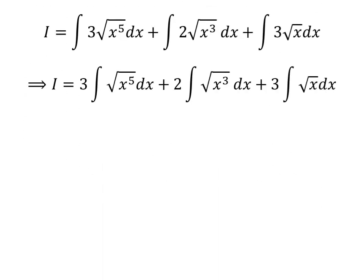Taking out the constants we get I is equal to 3 times the integral of square root of x raised to the power of 5 with respect to x, plus 2 times the integral of square root of cube of x with respect to x, plus 3 times the integral of square root of x with respect to x.